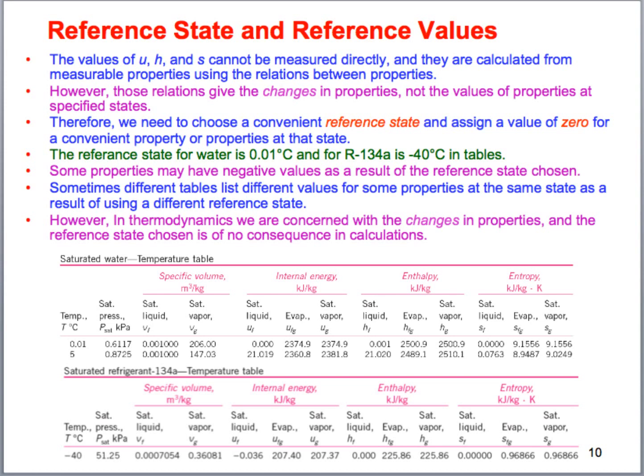The reference state we're going to be using for water is 0.01 degrees Celsius, and for refrigerant R-134a, it's going to be minus 40 degrees Celsius. You may see some negative properties based on this reference state, but don't pay too much attention to that. What's important in our thermodynamics analysis is typically the difference between two states.